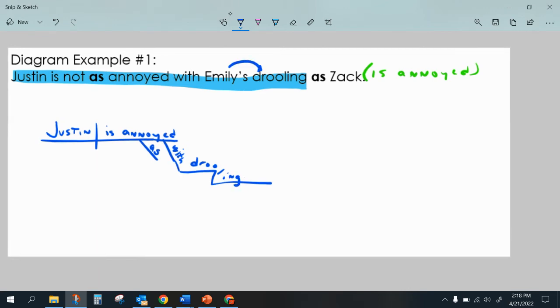And it's Emily's drooling. So remember, any time we have a determiner for a gerund, it's always going to go underneath the noun part. So let's put them right here.